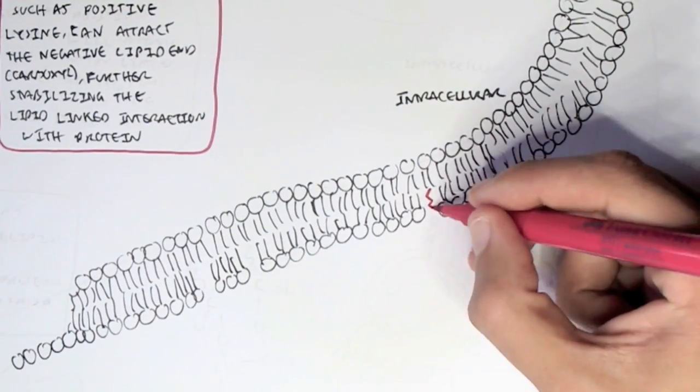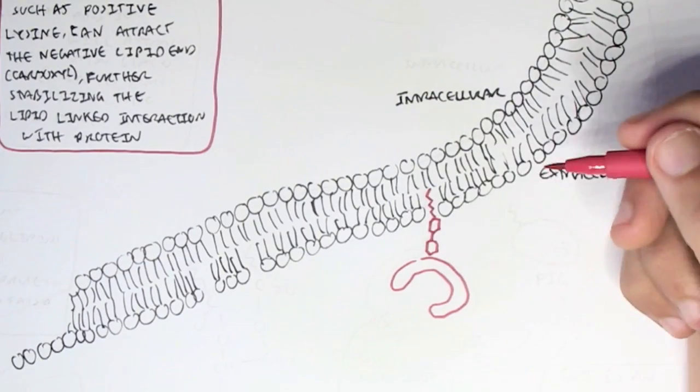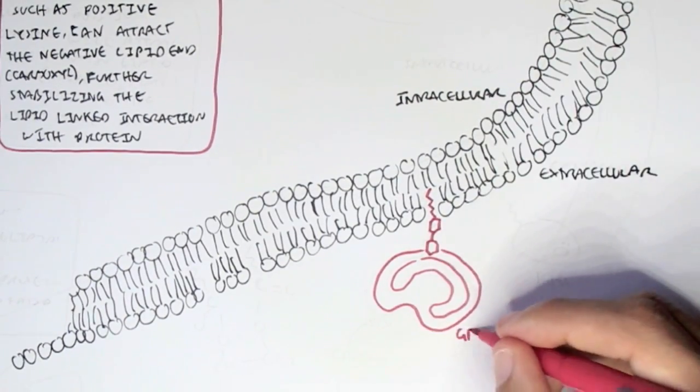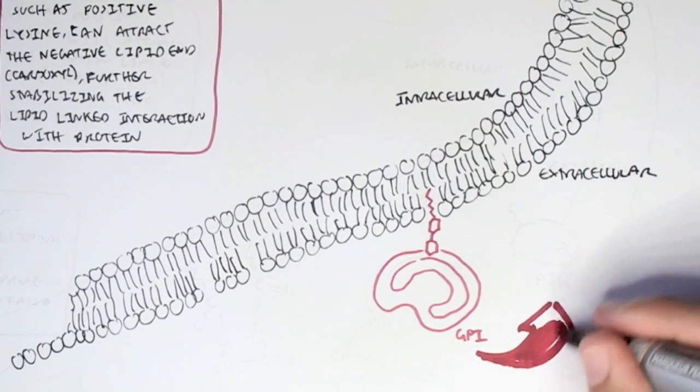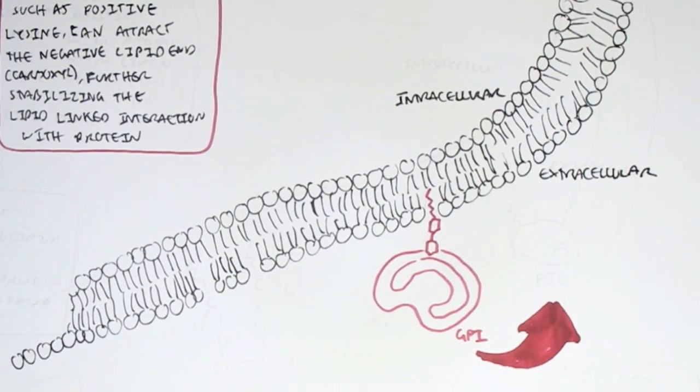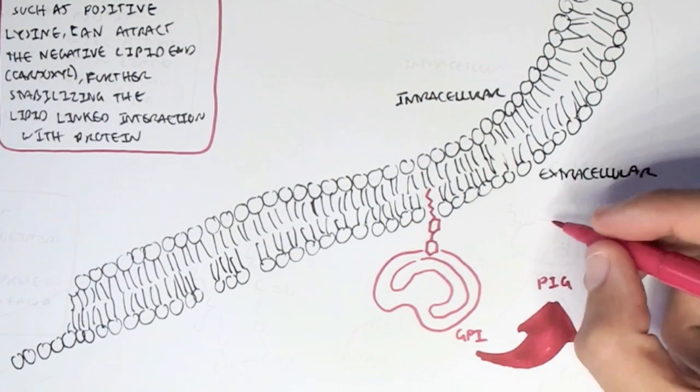Now let's get away from these peripheral lipid-linked proteins but go back to the GPI, the glycosylphosphatidylinositol. And a good way of remembering GPI, if we shuffle up the letters, we can spell out pig. And so GPI actually looks like a pig when you think about it.